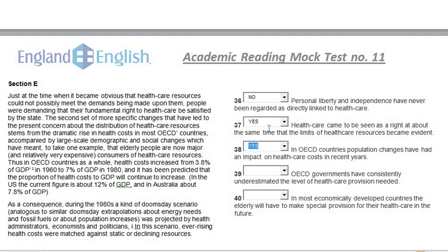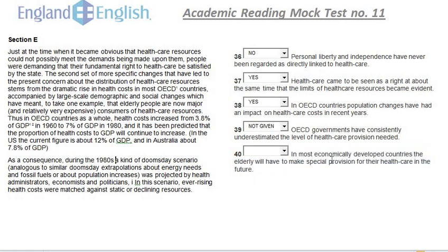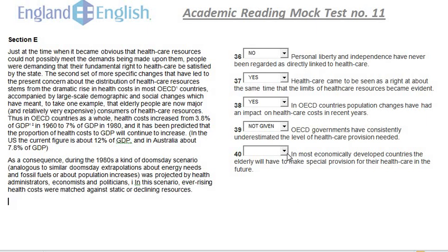Question 39: 'OECD governments have consistently underestimated the level of healthcare provision needed.' There is information about OECD in the passage, but there is no specific information about governments consistently underestimating. Answer: NOT GIVEN. Question 40: 'In most economically developed countries, the elderly will have to make special provision for their healthcare in the future.' The question is about elderly people making special provision, but there is no information about elderly people and their special provision in the passage. Answer: NOT GIVEN. Thank you.